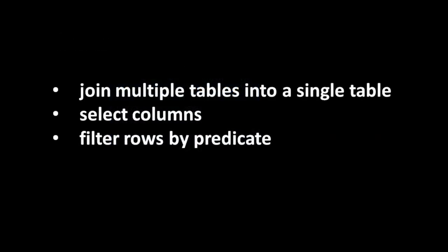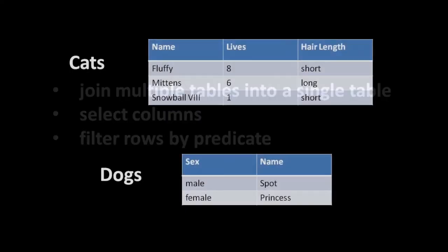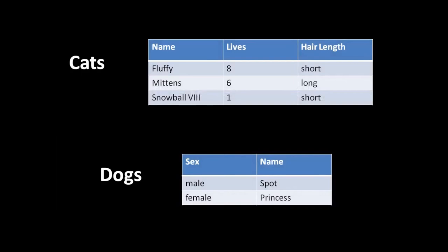In your query, once you've joined tables together, you can again select for columns and filter for rows by a predicate. How do you actually join tables together? Say we have a cats table and a dogs table. The cats table has three columns: name, lives, and hair length - with three rows, effectively three cats. The dogs table has two attributes - sex and name - and two rows, so effectively two dogs.